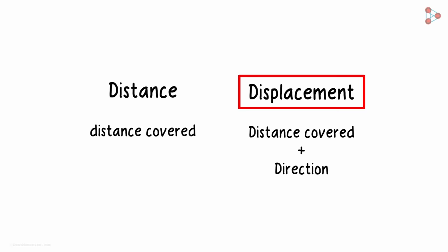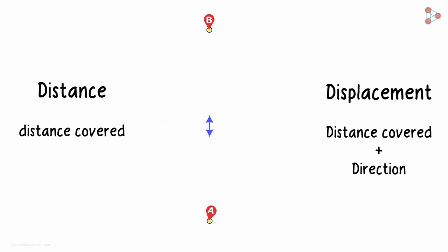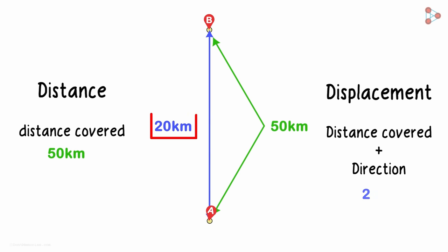Say the distance between towns A and B is 20 kilometers. So if we take a 50 kilometer route from point A to B like this, then the distance covered is 50 kilometers, and the displacement is 20 kilometers north of point A.